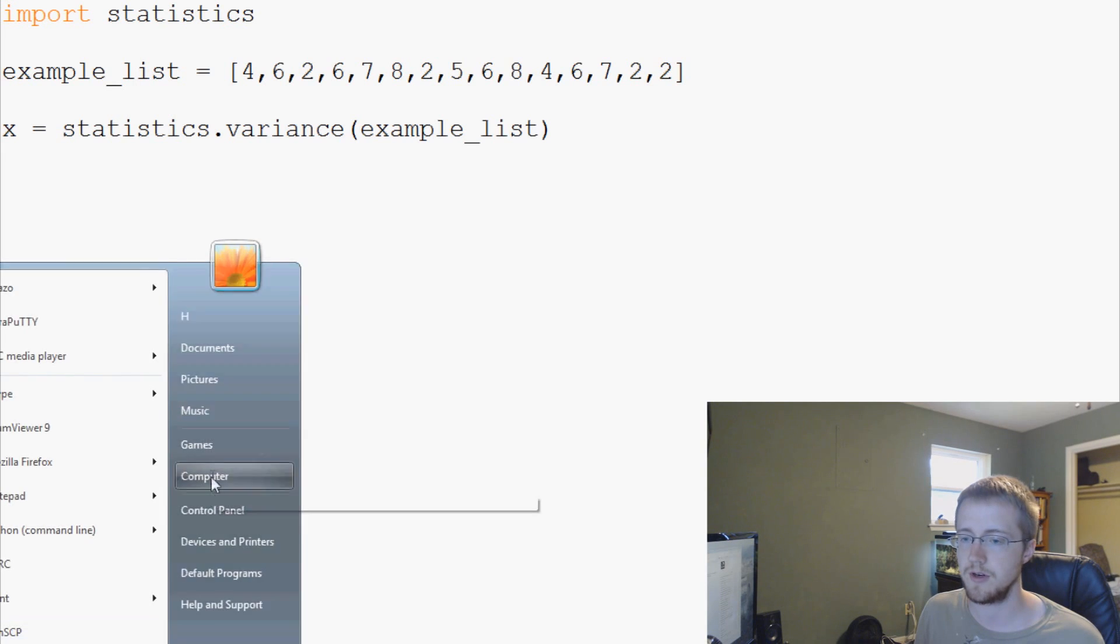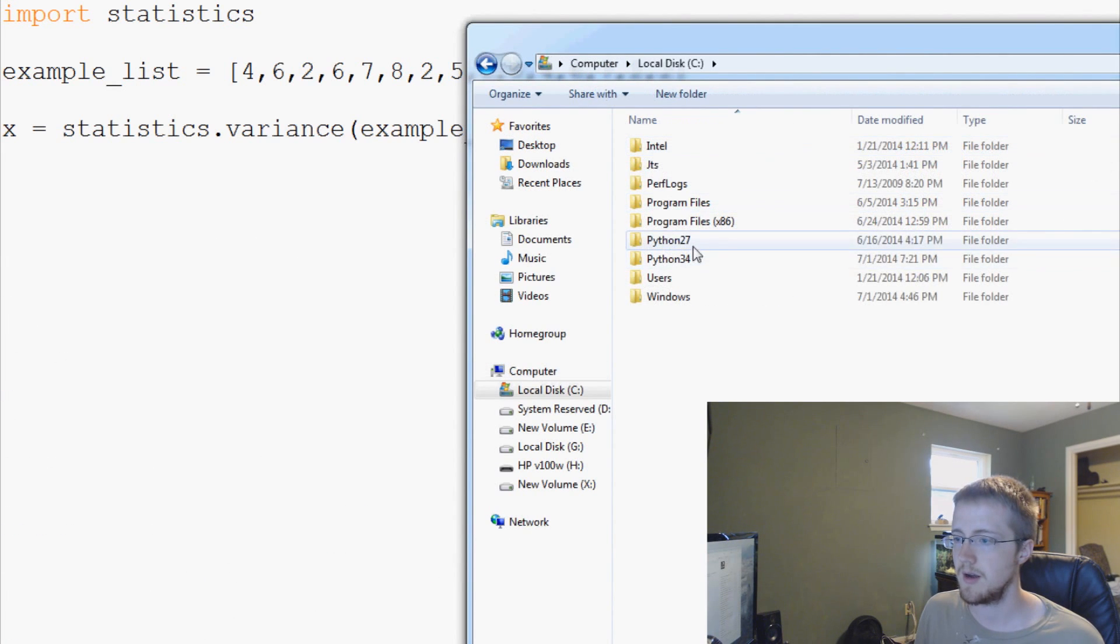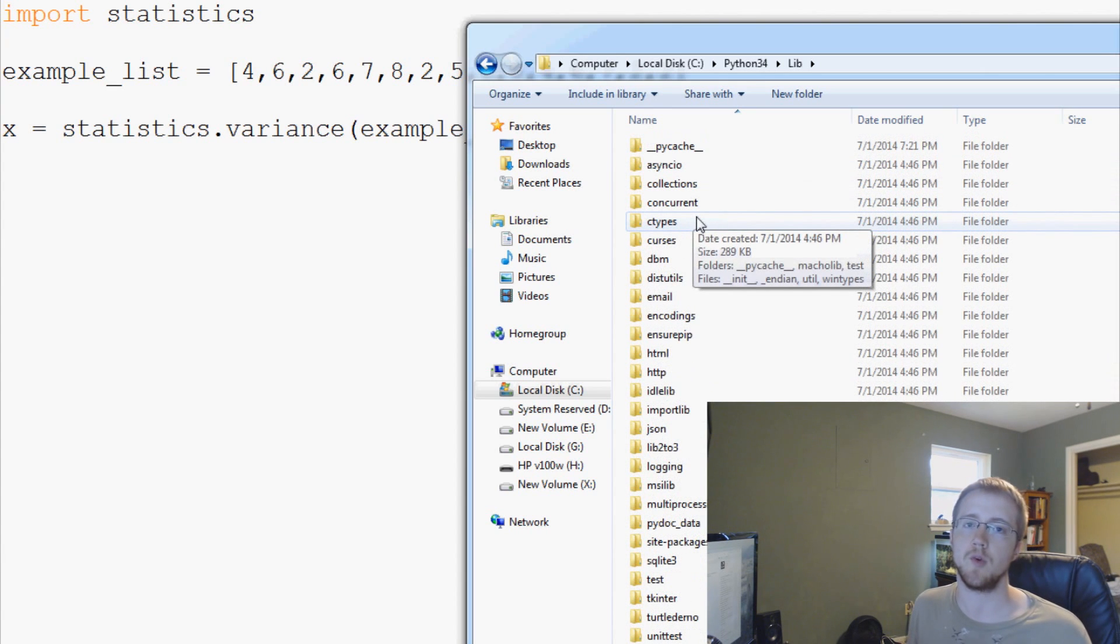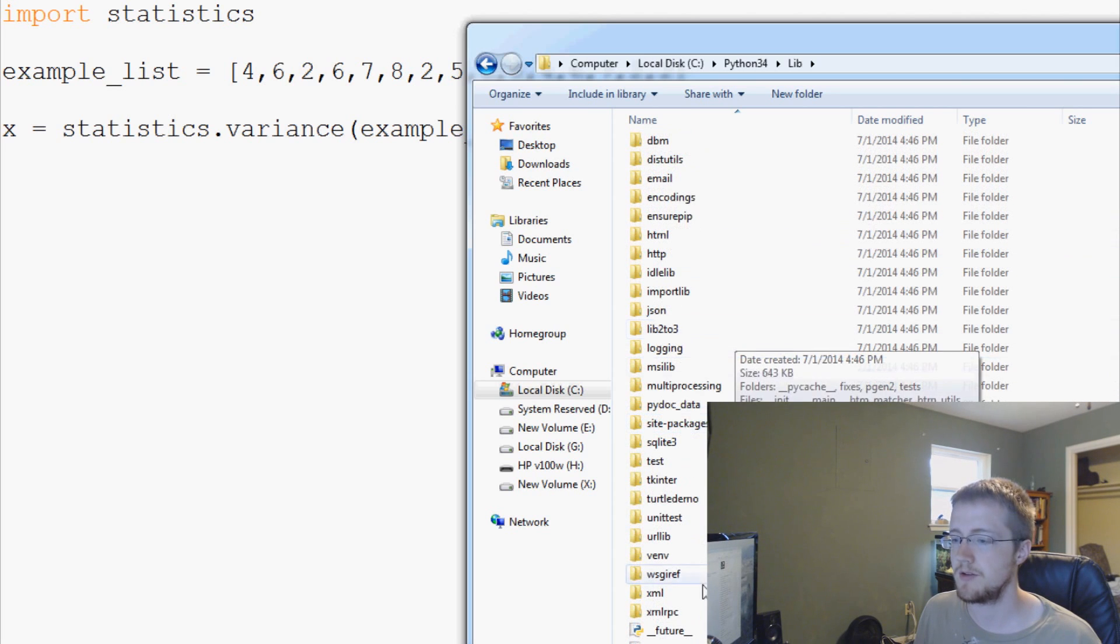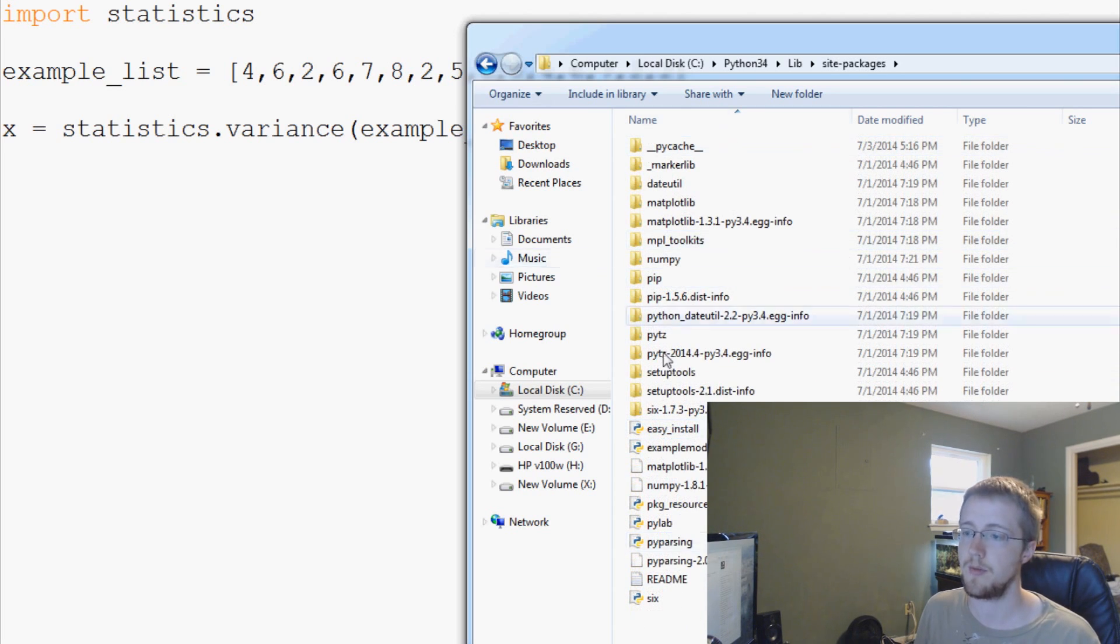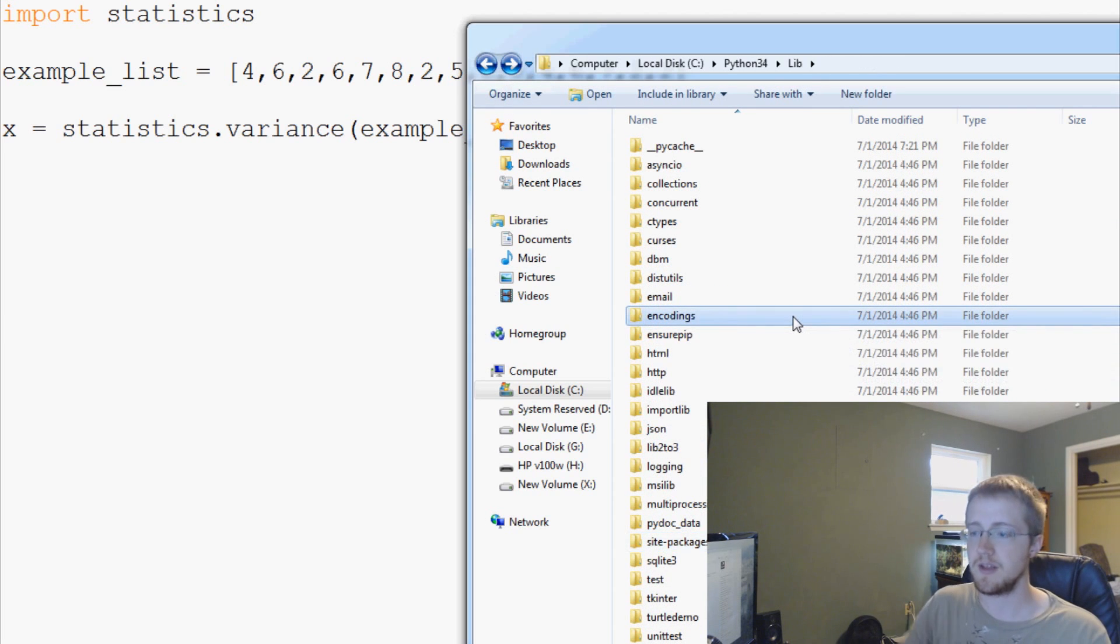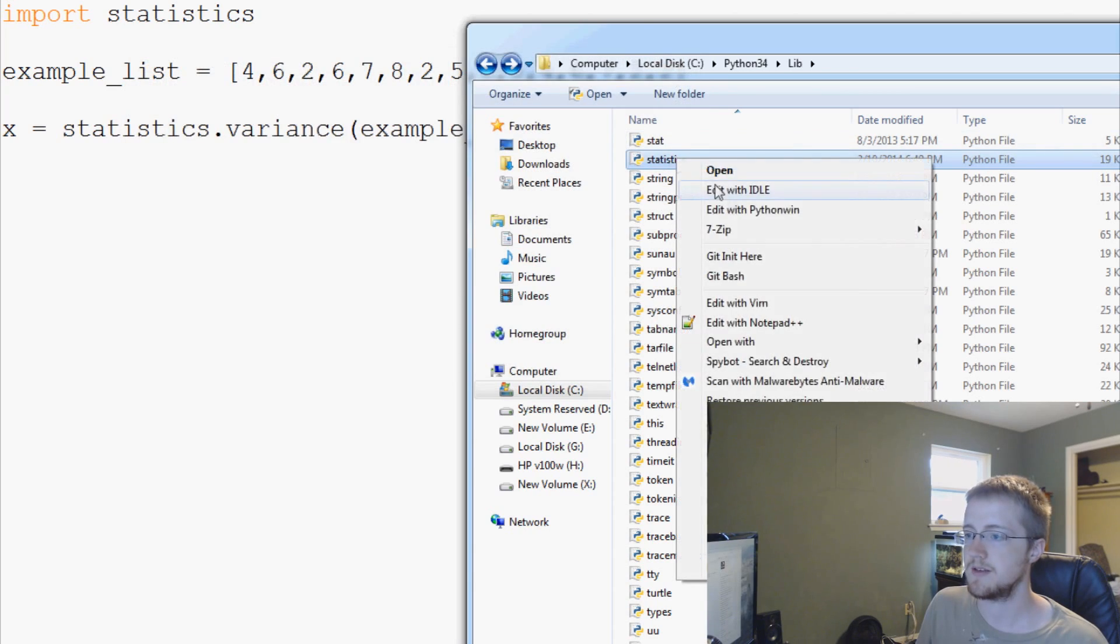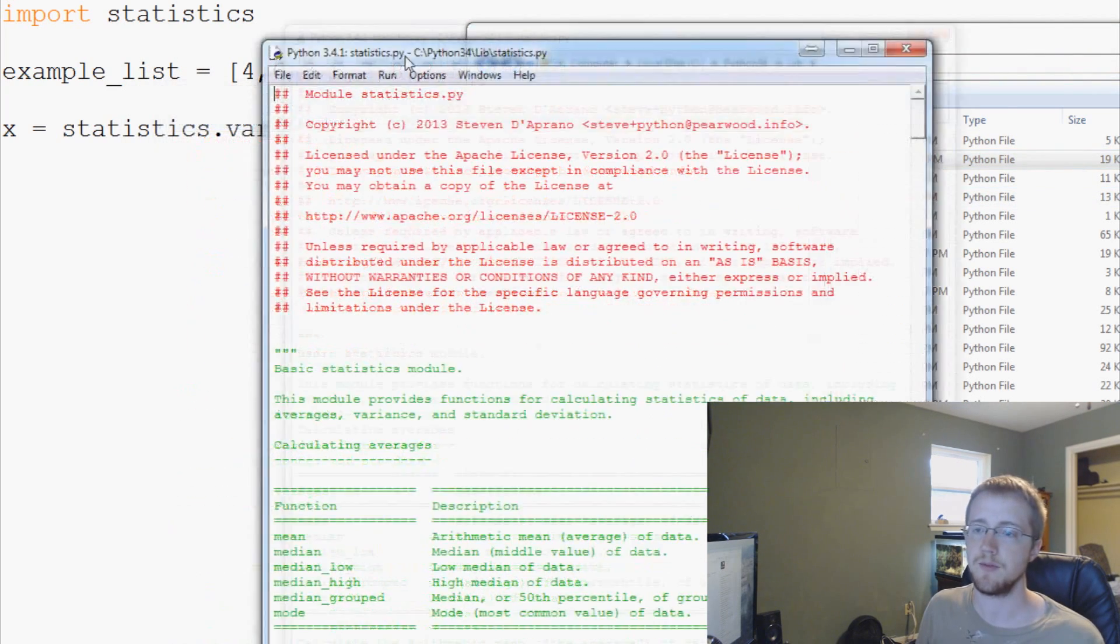I can even show you guys this. We can go to your computer C, Python 3.4 lib, and within lib is where you're going to find all of your vanilla modules, the ones that come with Python. And then all your third-party modules generally are going to be installed under site-packages. So these are all your third-party modules. Now statistics comes with it, so we can actually just find statistics.